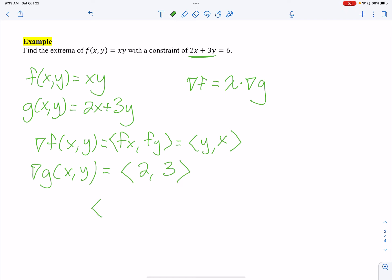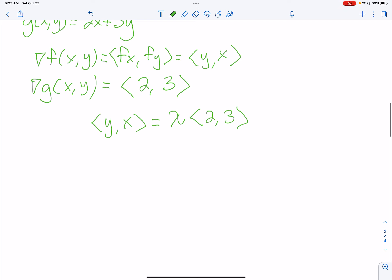So, now I can set this equation up. (y, x) is equal to some lambda times (2, 3). Well, I know component-wise have to be equal. So, I'm going to do y equals 2 lambda. I'm going to call 2, put the 2 out front. 2 lambda, and then x equals 3 lambda.